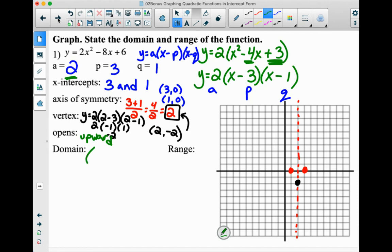Domain for all these is going to be all real numbers. And then the range starts at that vertex. So the vertex is at negative 2, it's at (2, negative 2). So really, we focus on the y coordinate there. Starts at negative 2,